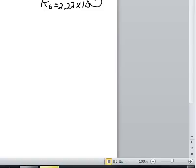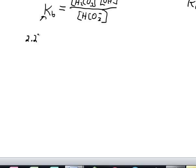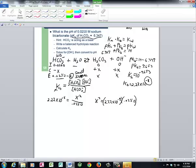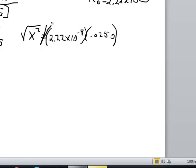This means we can ignore X in the denominator and avoid a quadratic equation. Setting up the equilibrium expression: Kb = 2.22 × 10^(-8) = X²/0.0250. Multiplying both sides by 0.0250 gives X² = (2.22 × 10^(-8))(0.0250). We'll take the square root to solve for X.